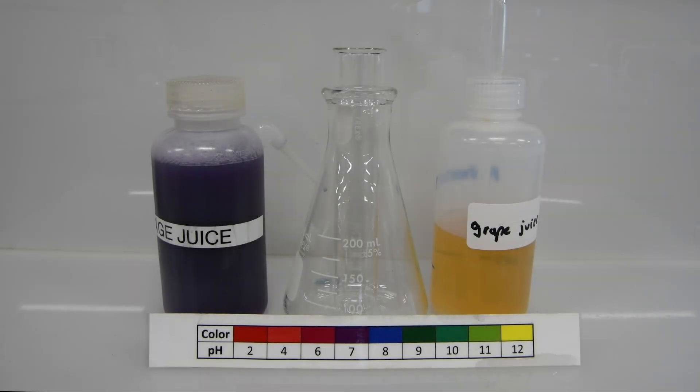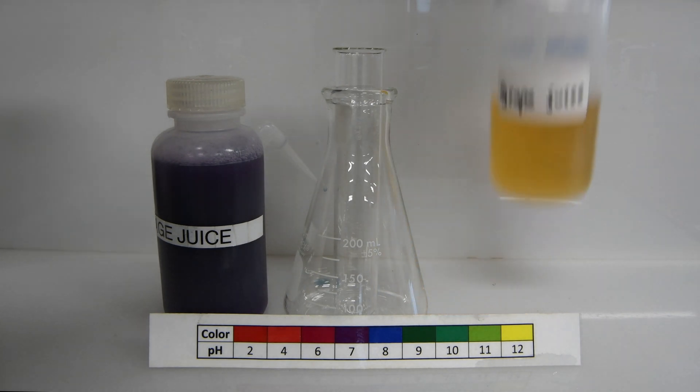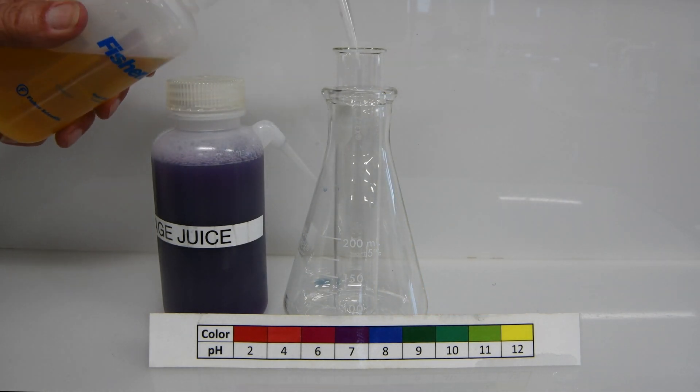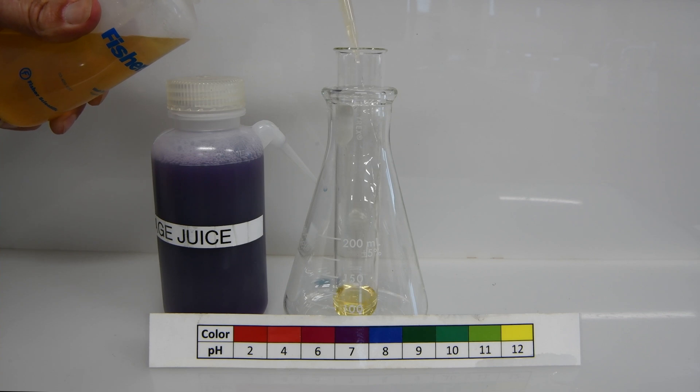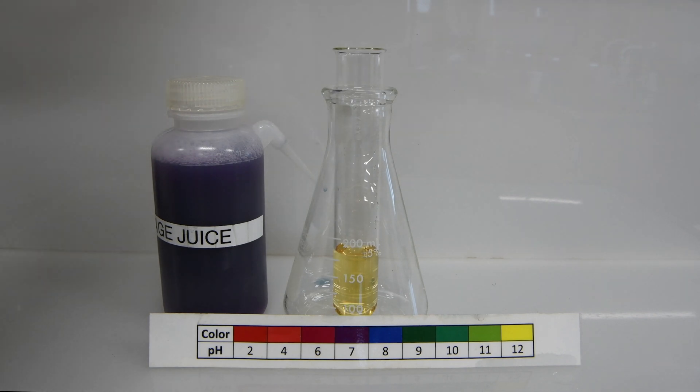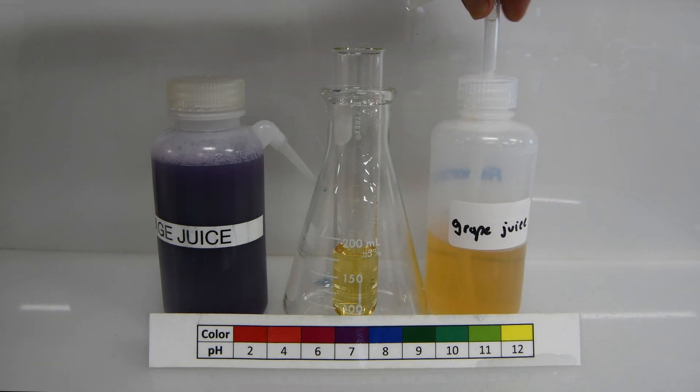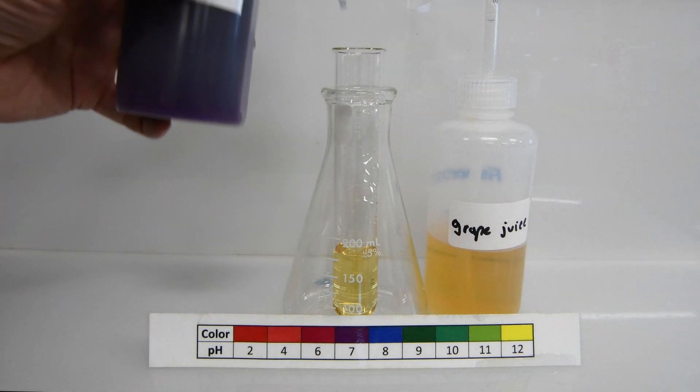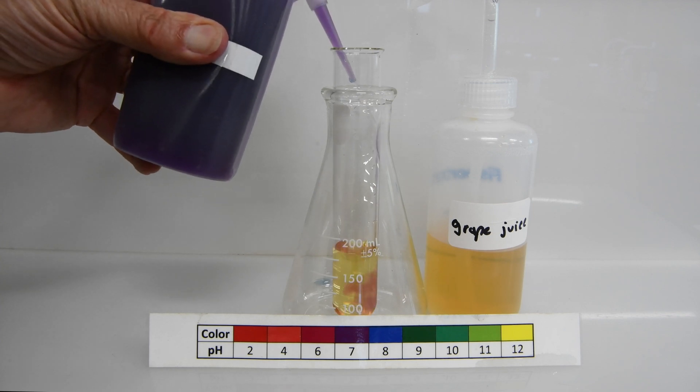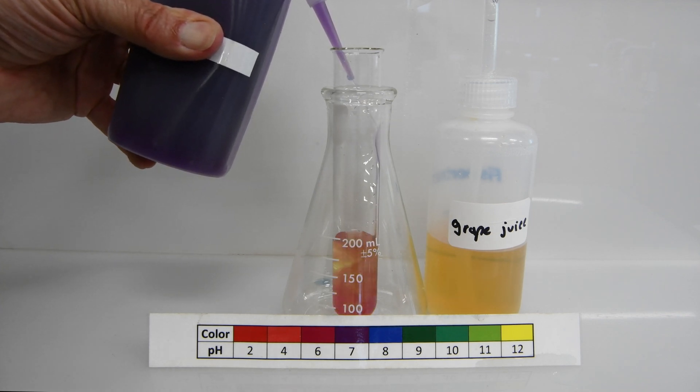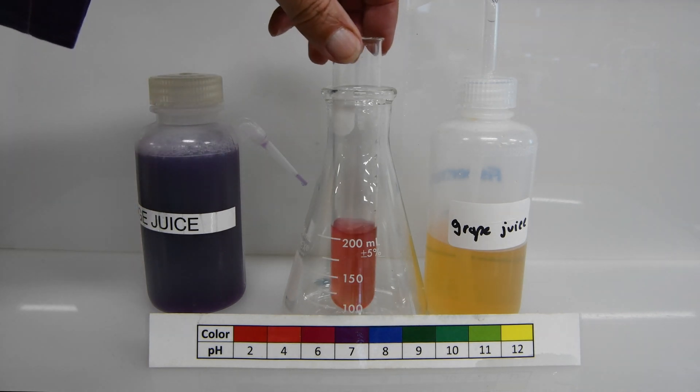Next up, we'll be testing grape juice. You'll notice we're using white grape juice because the purple juice, of course, would be too difficult to see the color change. That pale yellow or amber color will not cause us any problems. Now our requisite squirt of cabbage juice. And we have a reddish color.